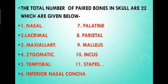The total number of paired bones in skull are 22 which are given below: nasal, lacrimal, maxillary, zygomatic, temporal, inferior nasal concha, palatine, parietal, malleus, incus, and stapes.